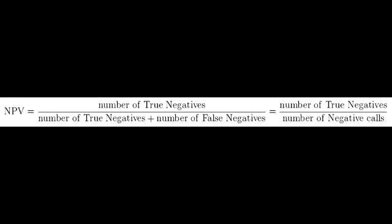Negative predictive value (NPV) is the proportion of negative test results that are true negatives — the probability that a person is disease-free given a negative test result. The equation is TN over (FN plus TN). NPV varies inversely with prevalence; high pretest probability results in low NPV.